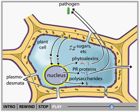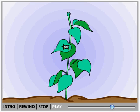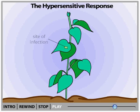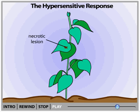A plant may also use a mechanism called the hypersensitive response to prevent widespread infection by an invading pathogen. In the hypersensitive response, infected cells essentially commit suicide, producing a patch of dead tissue called a necrotic lesion that walls off the pathogen.